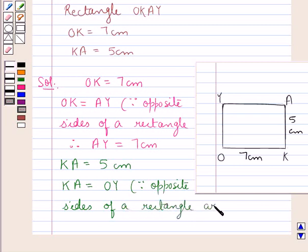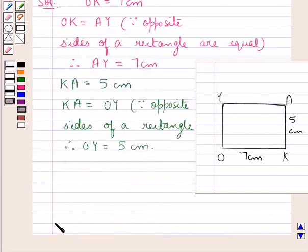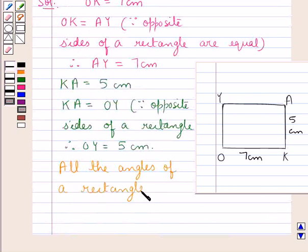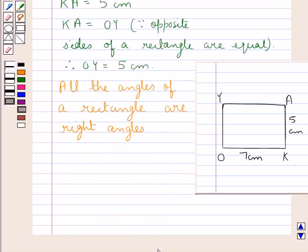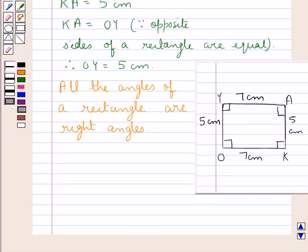So OY is equal to 5 centimeters. We also know that all the angles of a rectangle are right angles. Now we have all the measurements: OK is 7 centimeters, KA is 5 centimeters, AY is 7 centimeters, and OY is 5 centimeters, with all angles being right angles. We will now construct the rectangle OKAY step by step.